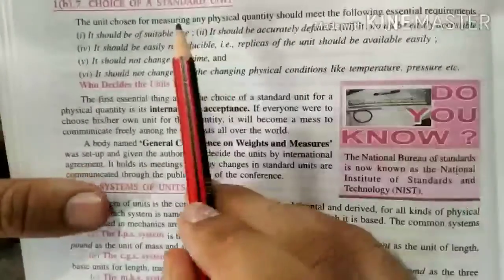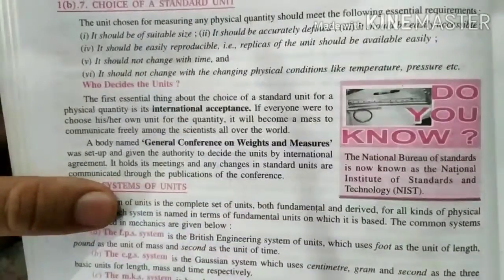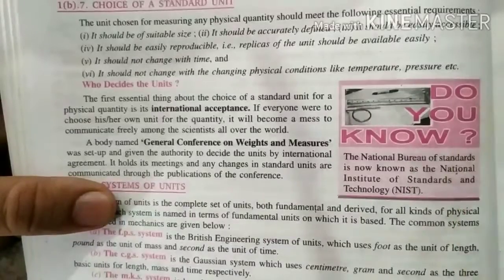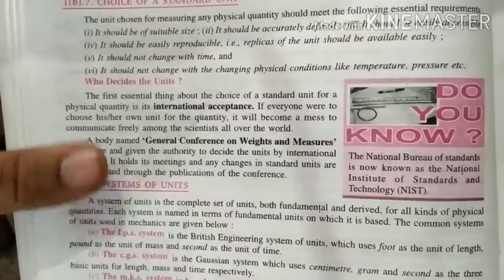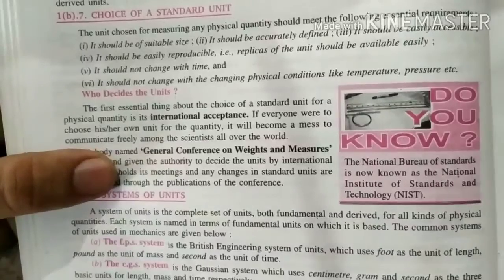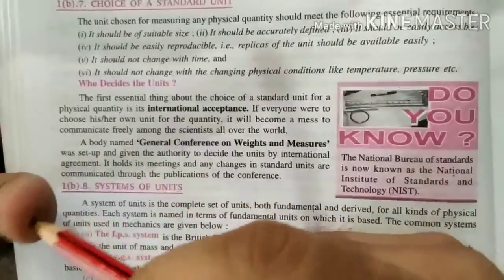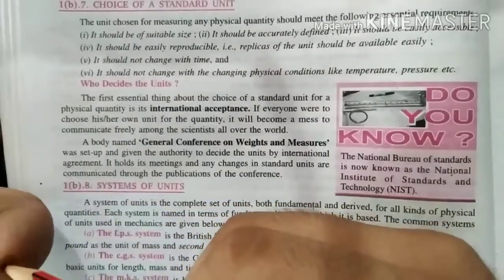Next, choice of standard unit. Now we have read about the derived unit and the fundamental unit. Now we have to understand the fundamental unit, like time, how much is the unit? Second, meter. So second is for time, not meter.